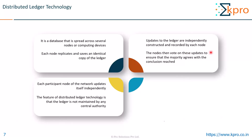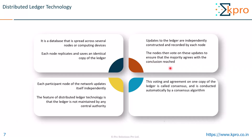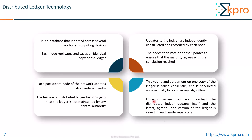The nodes vote on these updates to ensure that the majority agrees with the conclusion reached. This voting and agreement on one copy of the ledger is called consensus and is conducted automatically by a consensus algorithm. Once consensus has been reached, the distributed ledger updates itself and the latest agreed-upon version of the ledger is saved on each node separately. This is basically what distributed ledger technology is.